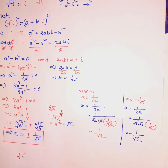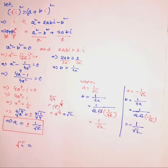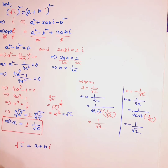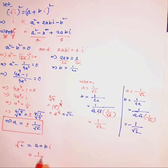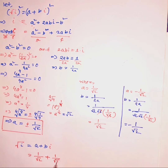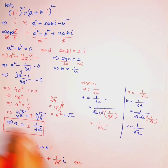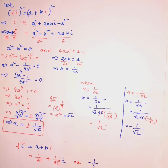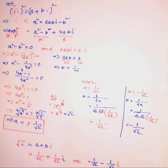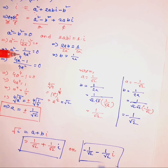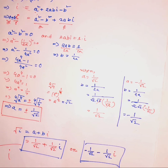So the square root of i equals a plus bi. The two solutions are: when a equals 1 over square root of 2 and b equals 1 over square root of 2, or when a equals negative 1 over square root of 2 and b equals negative 1 over square root of 2. Those are the two values of the square root of i. Thanks for watching!